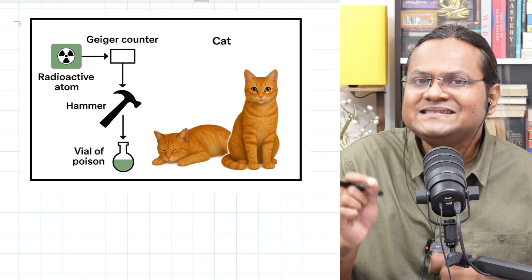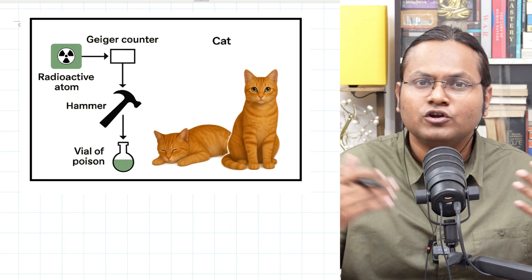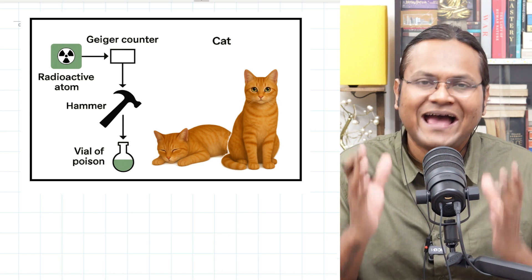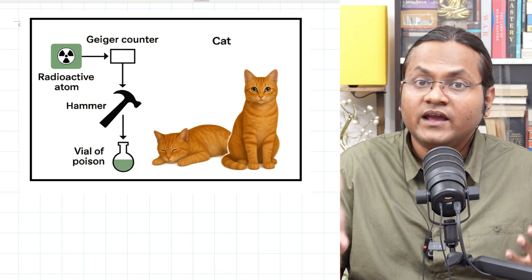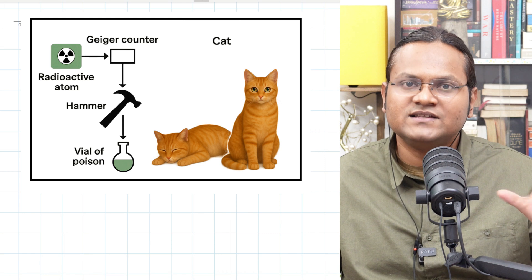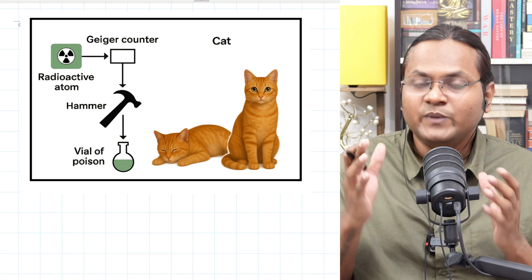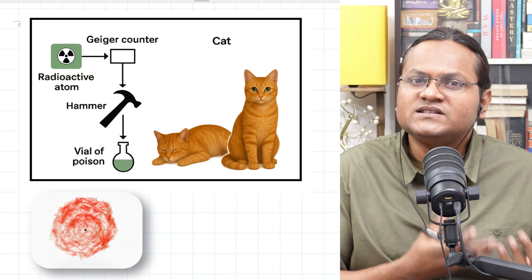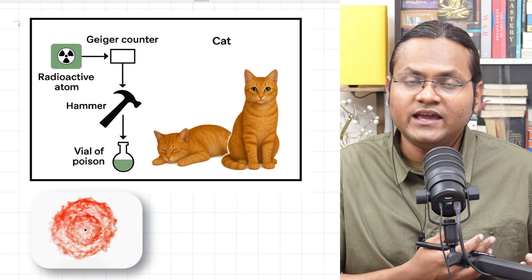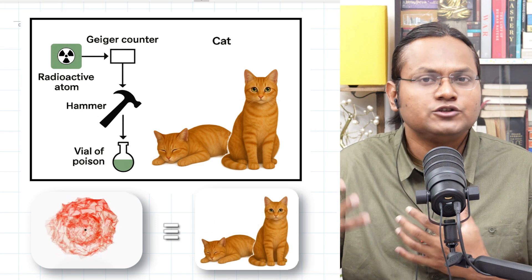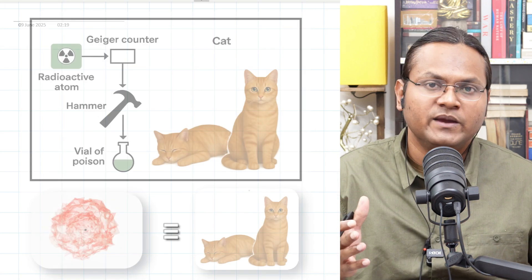This intrinsically links the life and death of a cat with the decay or non-decay of a radioactive atom. And since atoms are described by the quantum theory, the same physics that applies to an atom now must also be applicable to that of a cat. Which means if an atom exists in a quantum superposition of decayed and not decayed, that would mean the cat should also exist in a quantum superposition of dead or alive until an observation is made.